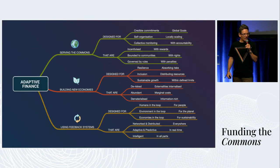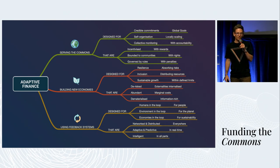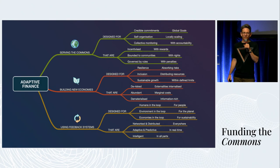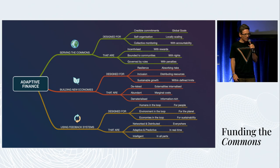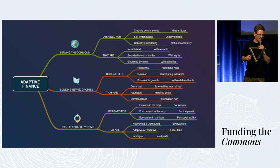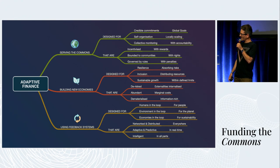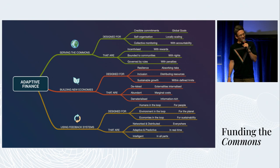This is a bonus slide talking about adaptive finance in the context of the commons — really applying the principles of the commons to this, that adaptive finance can be used to serve the commons, to build new economies, and use feedback systems. I won't go into all the details here, but you're welcome to get a copy of this slide if it's interesting to you. Thank you very much.